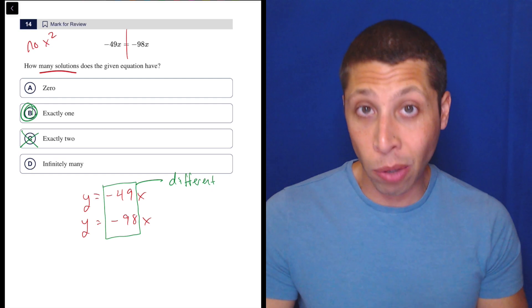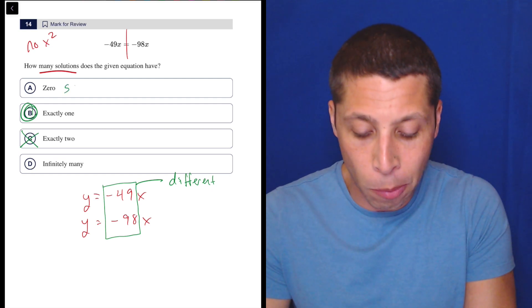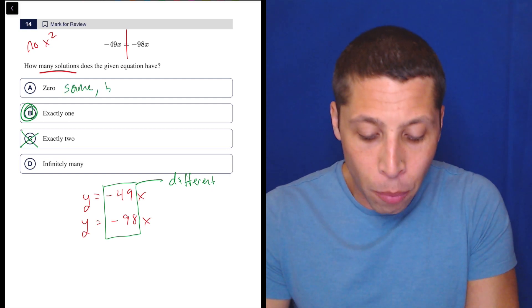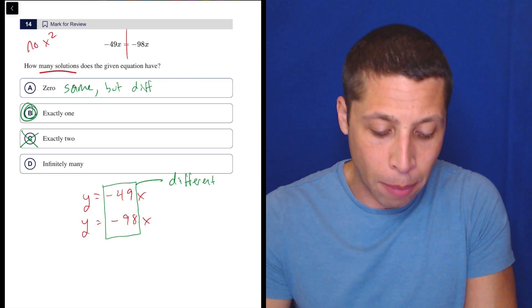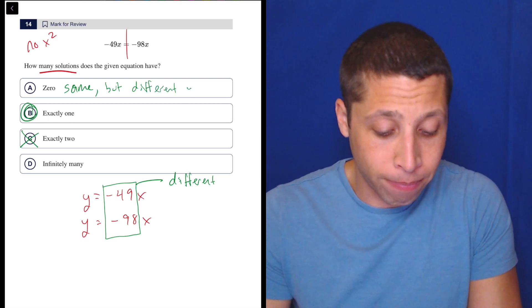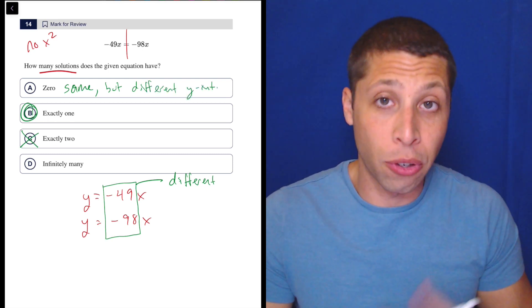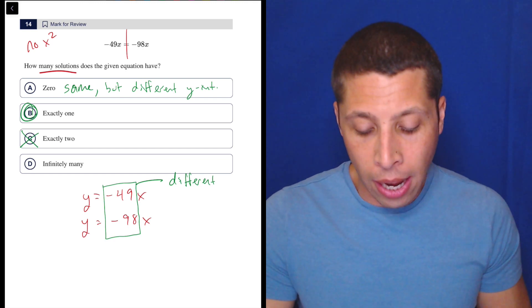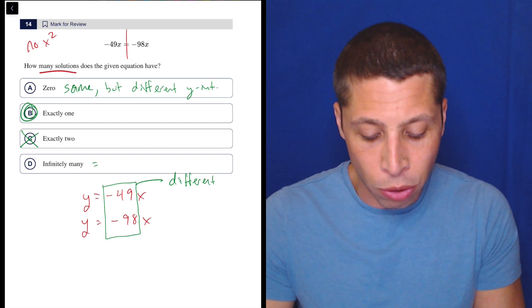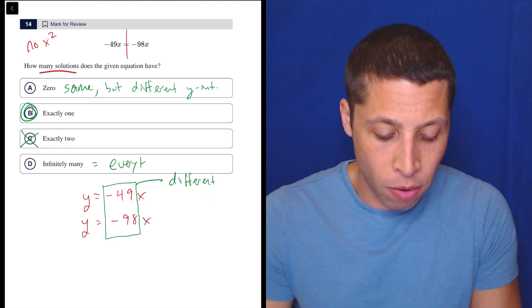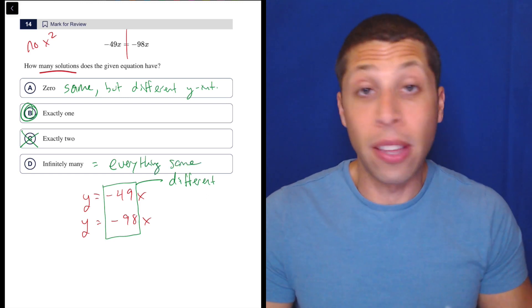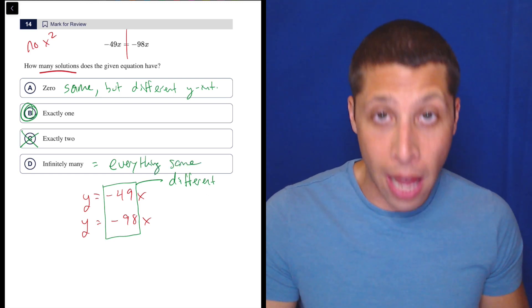Now the reason we would have zero solutions is if the slopes were the same, but we had different y-intercepts. So we don't have any y-intercepts here. They're both zero. So those are the same, but that doesn't really matter. The infinitely many solutions would be everything is the same. So that would be the same slope and the same y-intercept because they would be the same line.